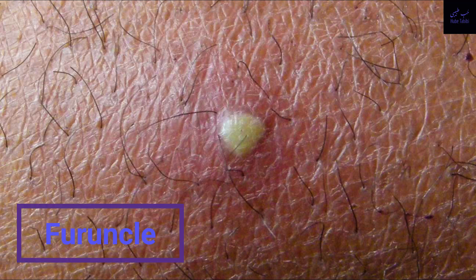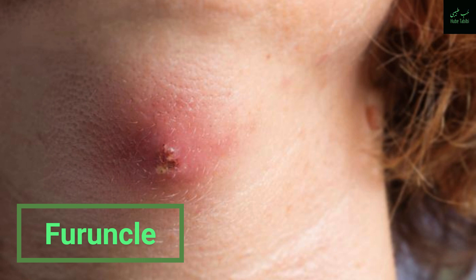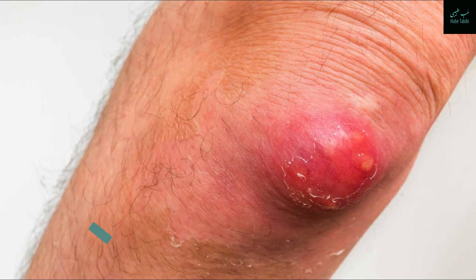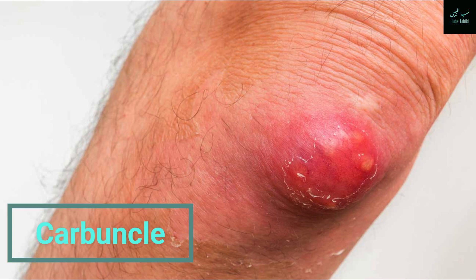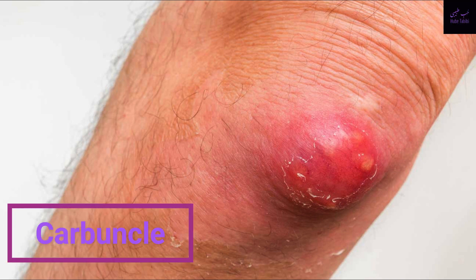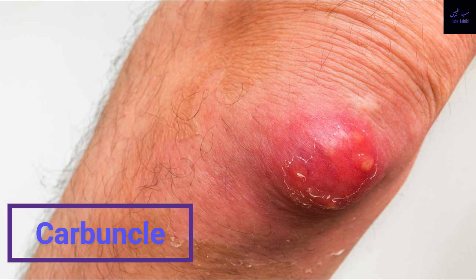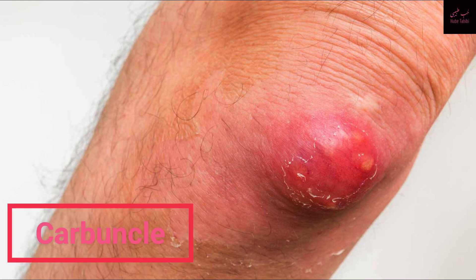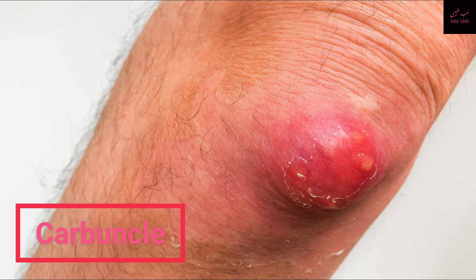Furuncles usually start as a tender red bump and develop into a painful, pus-filled lump. Carbuncles are clusters of furuncles that can be more severe and may cause a deeper infection in the skin. These infections are caused by the bacteria Staphylococcus aureus, which is commonly found on the skin and in the nose.